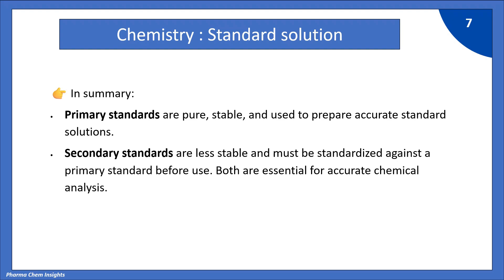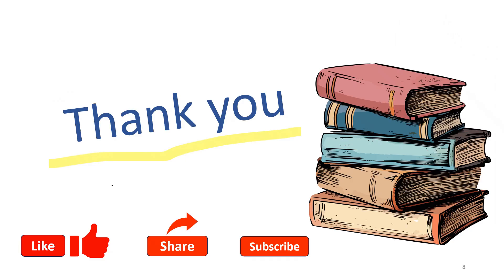Now let's summarize. Primary standards are pure, stable and used to prepare accurate standard solutions, whereas secondary standards are less stable and must be standardized against a primary standard before use. Both are essential for accurate chemical analysis. And that's the clear difference between primary and secondary standards.